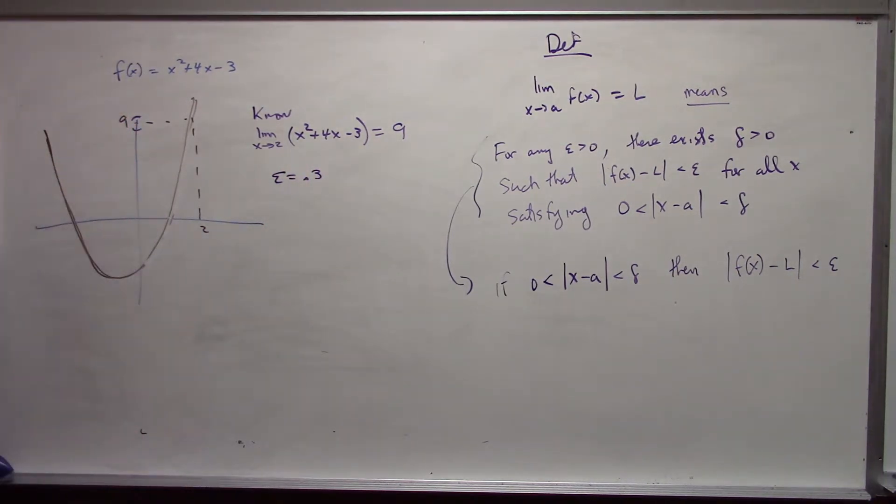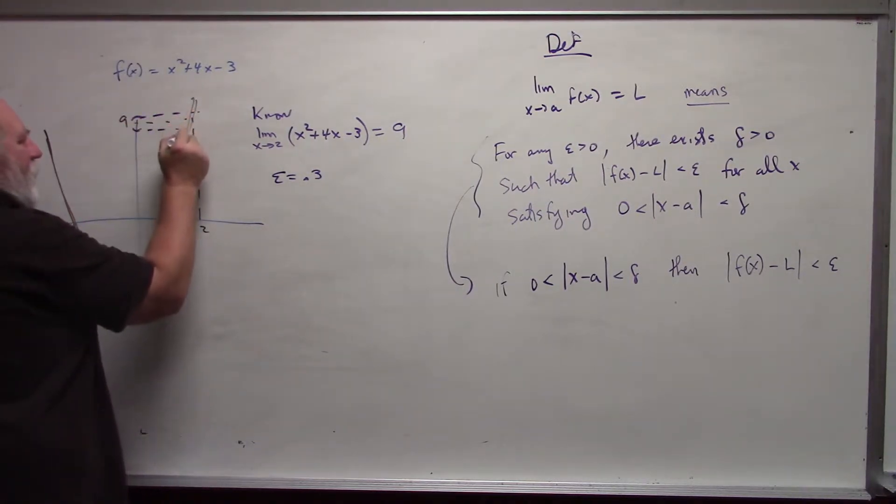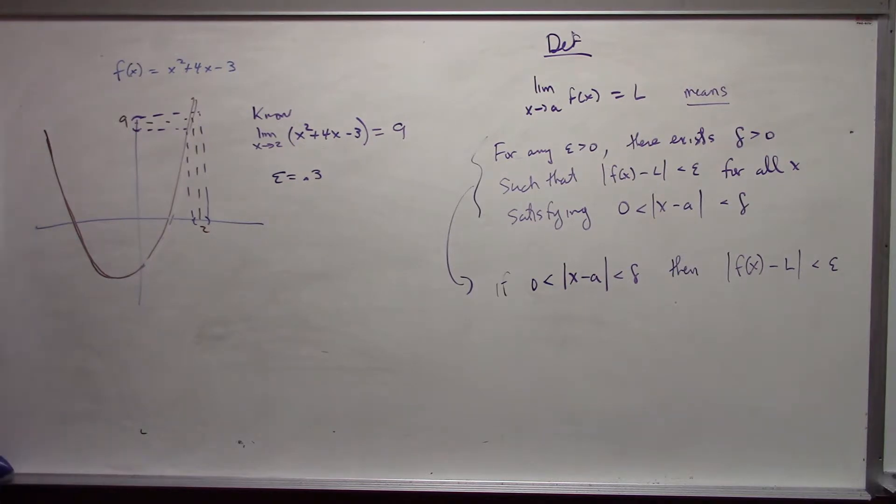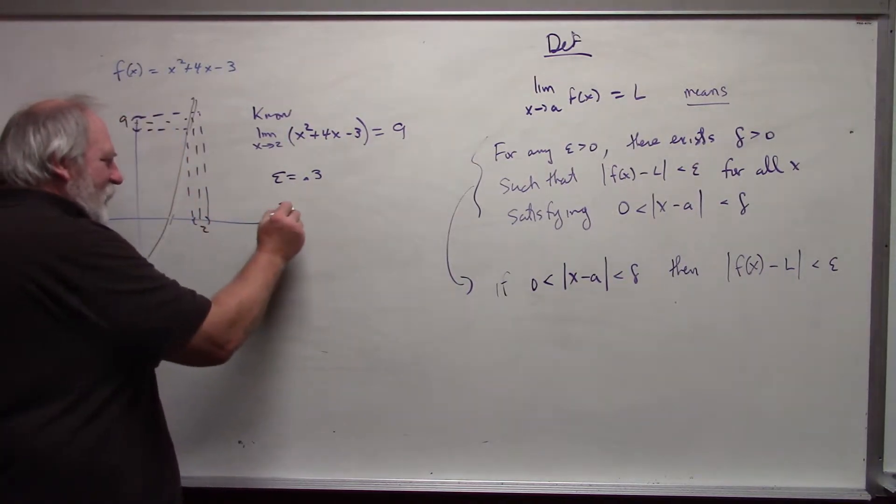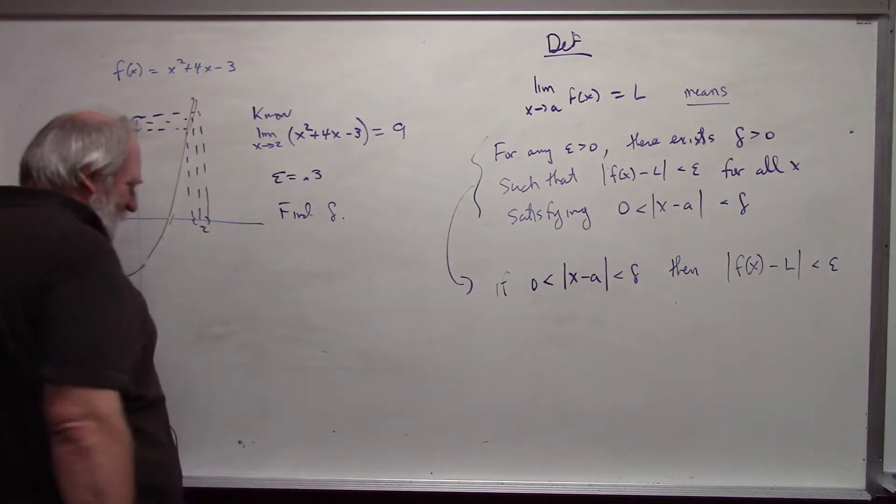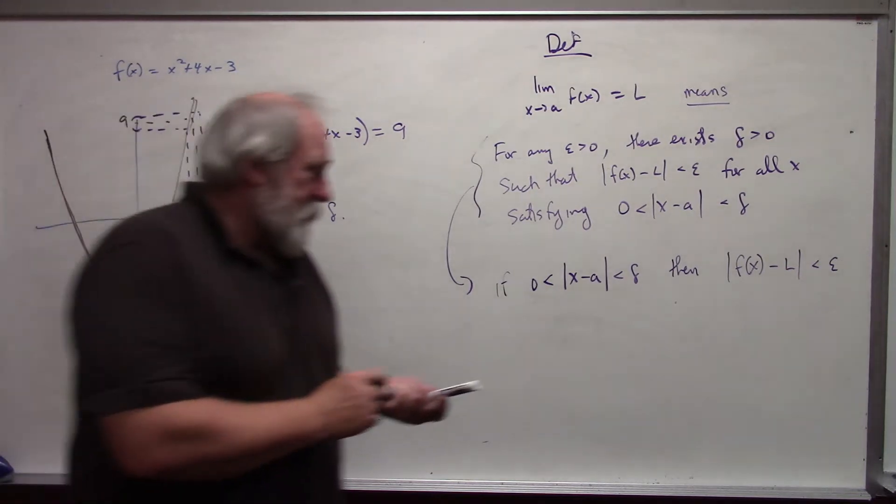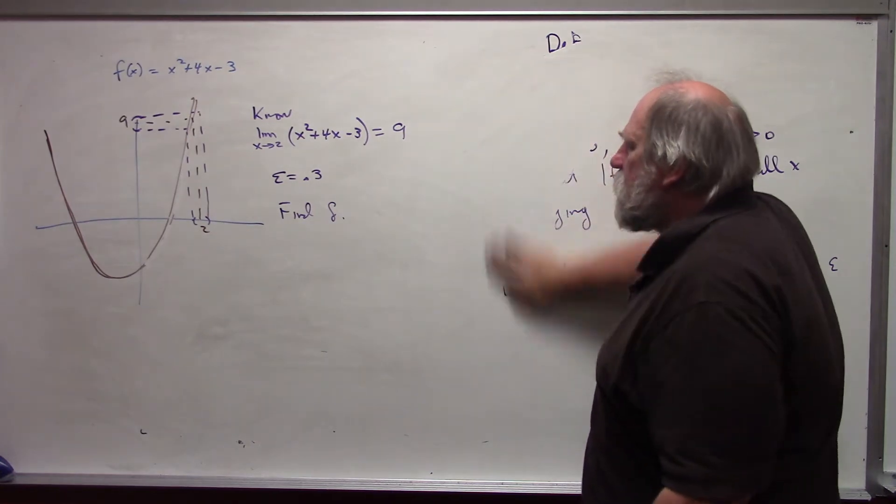I want to find the largest possible delta value so that if x is within this interval around 2, a delta distance around 2, then my functional value is going to be up here. I need to find delta, the largest delta that will work. And for that, we actually have to work backwards. So we're going to be doing some algebra, a bunch of algebra here.